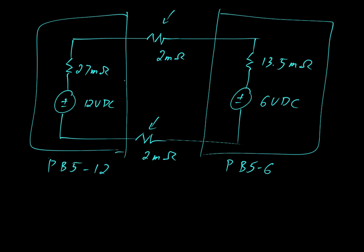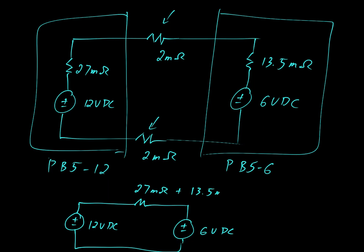Now, when we do this, we can make an equivalent circuit. And that would look like this. We would have our 12 volt battery. A series resistance. And this represents the 6 volt. So 12 volts here, and 6 volts here. And now this resistor here has a value of 27 milliohms, plus 13.5 milliohms, plus 2 milliohms, plus 2 milliohms.